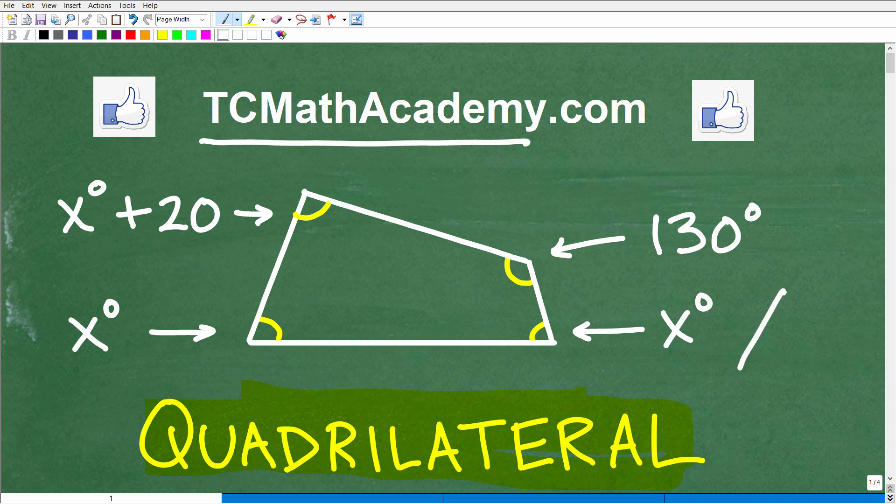But a polygon is a closed figure where the sides are straight lines. So the first polygon that we have is a triangle, so that's a three-sided polygon. And of course, a three-sided polygon we call a triangle. A four-sided polygon is called a quadrilateral.